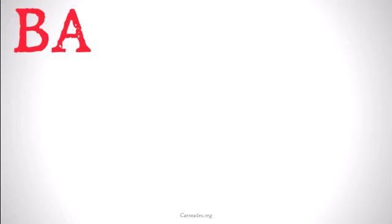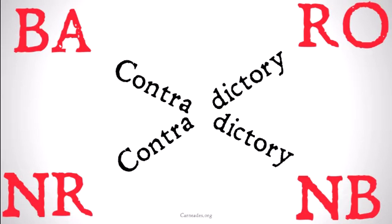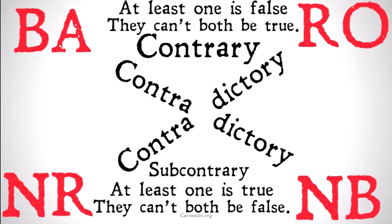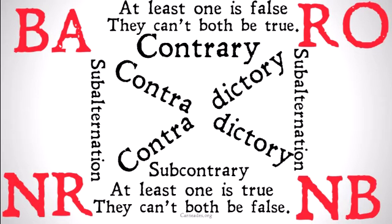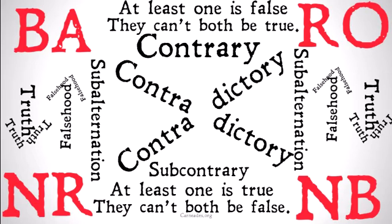These different terms can be used to create a classic modal logic square. BA and NB are contradictory, as are NR and RO — bringing something about versus not bringing it about, ruling something out versus not ruling it out. The top two are contrary: at least one is false, they can't both be true. The bottom two are subcontrary: at least one is true, they can't both be false. We have subalternation relations going down the sides — truth flows downwards, and falsehood flows upwards. This is a classic square of opposition; check out the other videos on deontic and other squares of opposition for more.